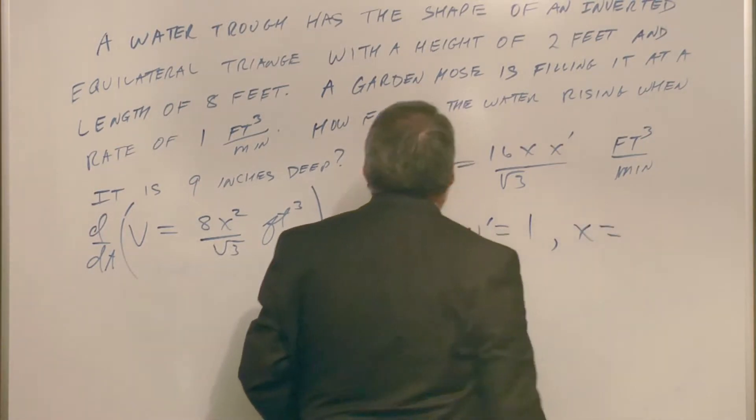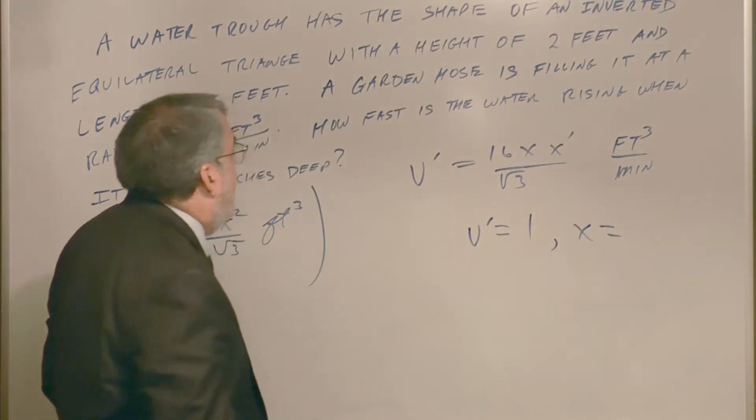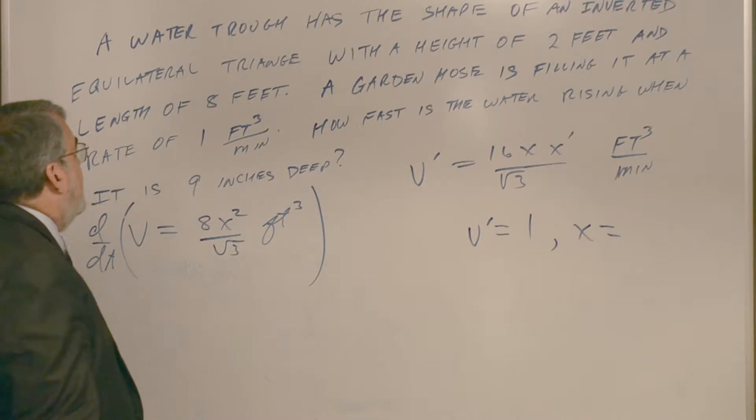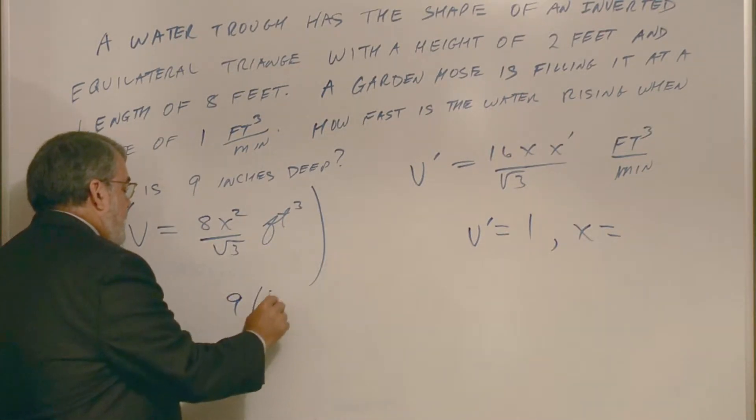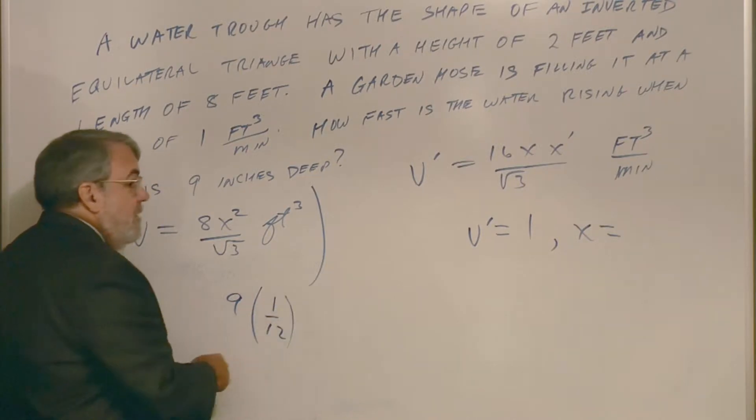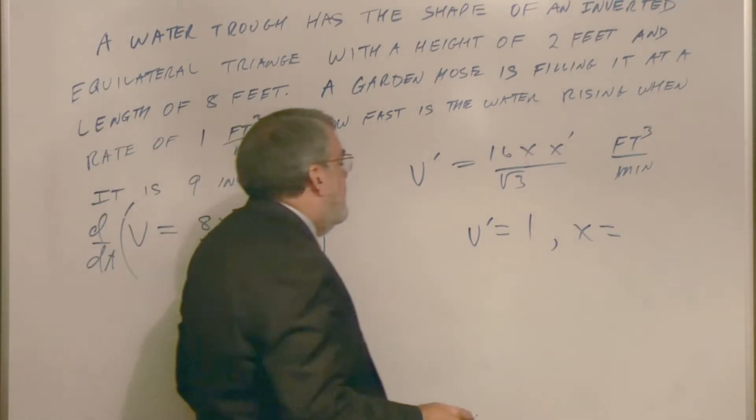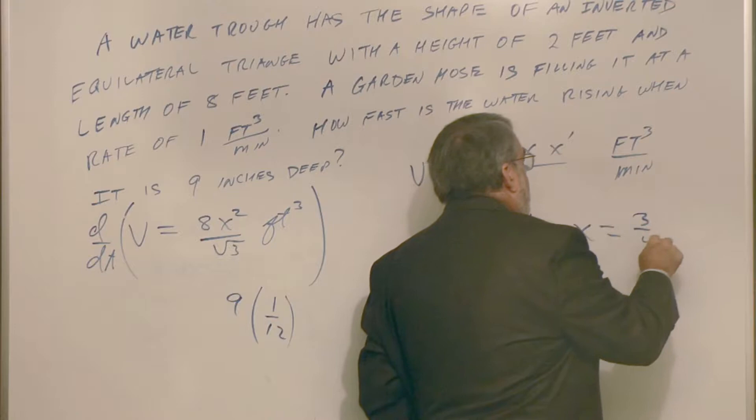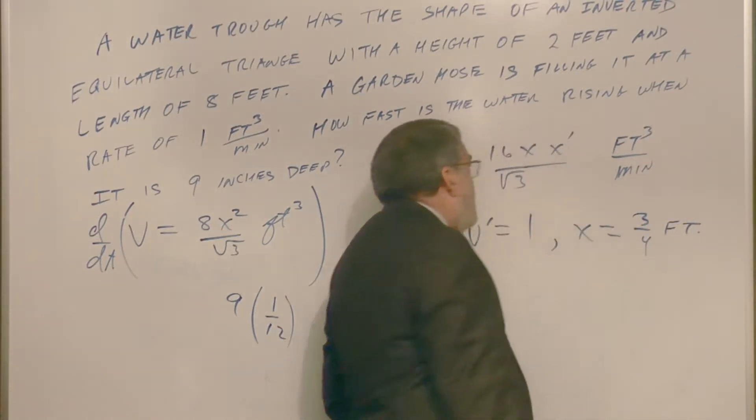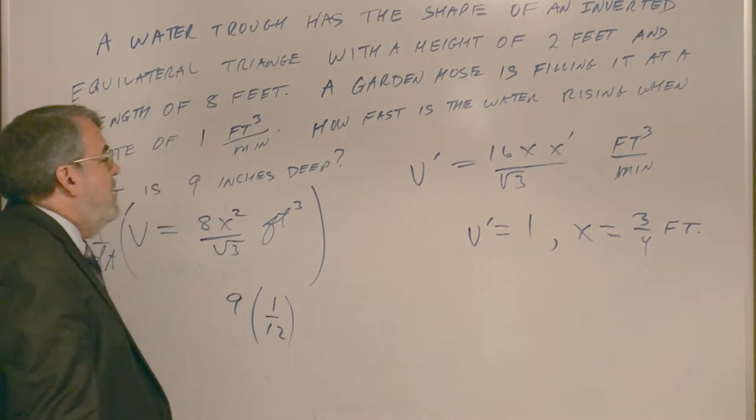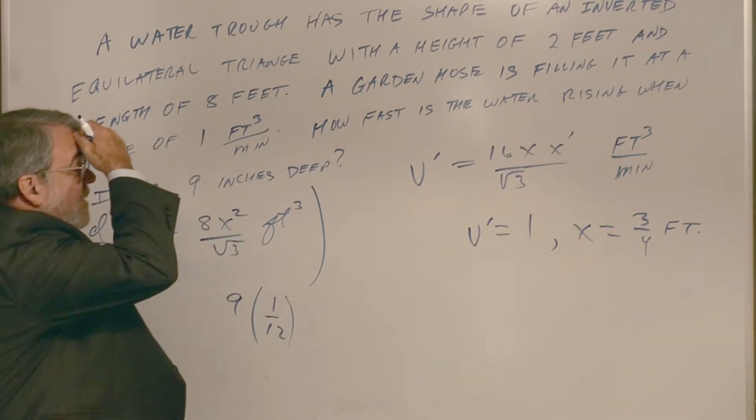Well, guess what? The water flowing in is flowing in at one cubic feet per minute. See, my units are matching here. So v prime is one cubic feet per minute. X is nine inches. And let's go with feet. I'm still in feet. So nine inches is three fourths of a foot. So if I plug all that in, I can figure out what x is.